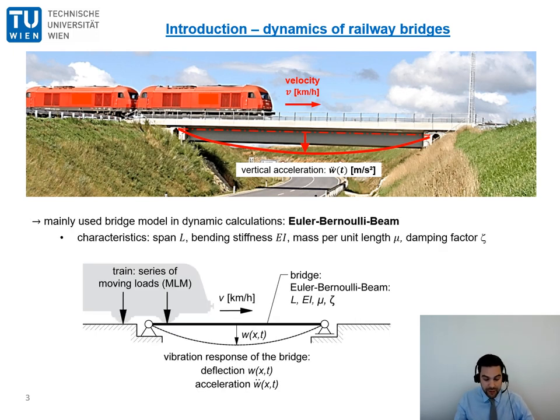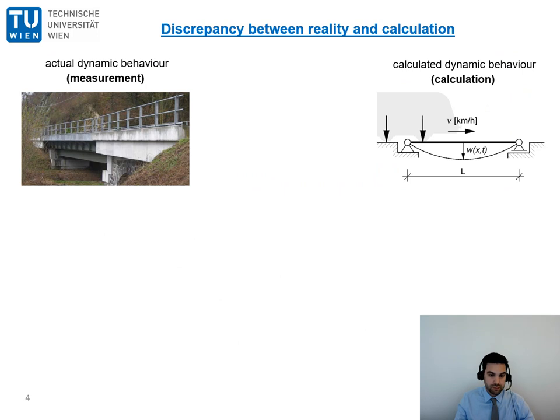Well, for a dynamic calculation of train induced bridge vibrations there's a wide range of mechanical models for both the bridge and the crossing train, with different levels of detail. The mainly used bridge model is the Euler-Bernoulli beam, which you can see below. This is a very simple model where the structure and the ballasted track are combined in one single beam.